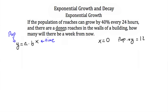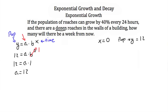Plugging into our standard formula: y is 12, we don't know a or b, and x is zero. Since b to the zero power is 1, we have 12 equals a times 1, so a equals 12. This means a is always our starting value — whatever our population is when x equals zero. That also makes it our y-intercept.